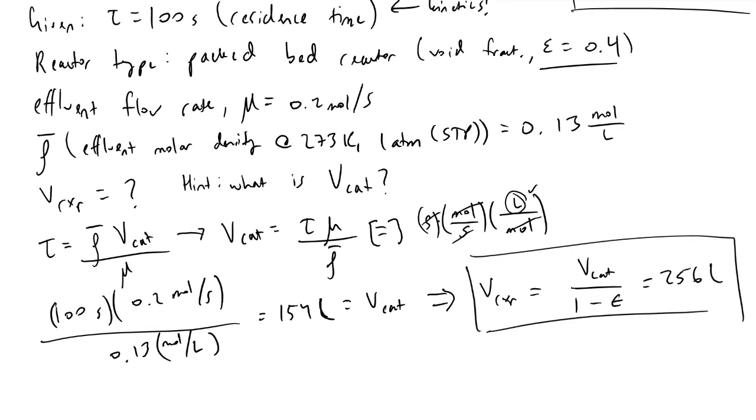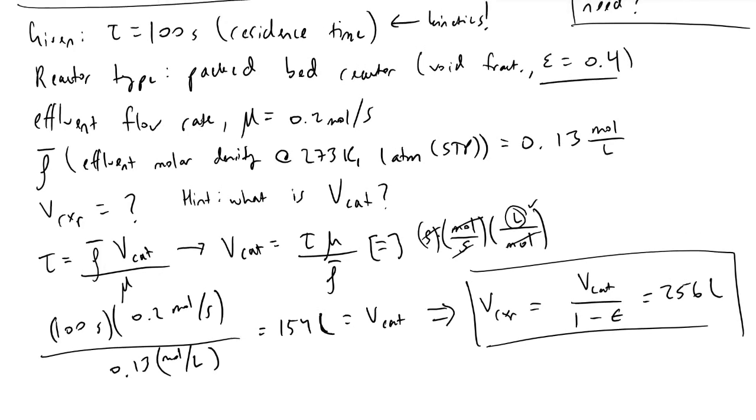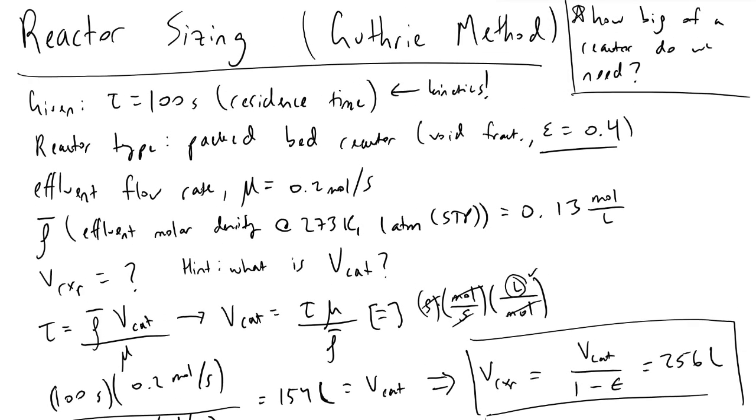So we can see using the Guthrie method, we were able to pretty quickly arrive at a ballpark figure for what kind of volume we're going to need. It is a very important note, though, that this is all an approximation. This is getting into costing in reactor design and chemical process design. So these are kind of back of the envelope preliminary calculations that you're going to be doing.